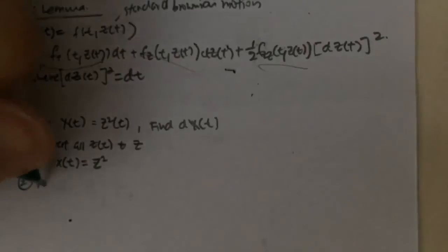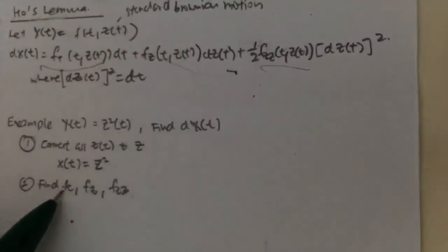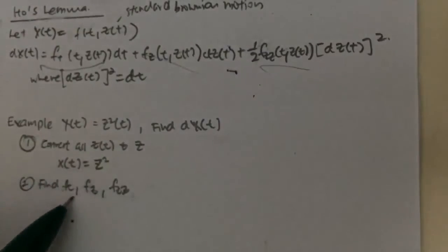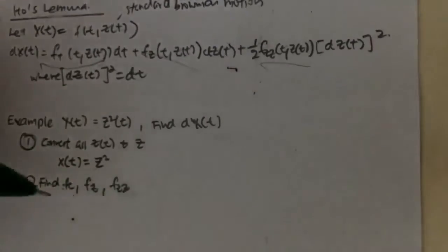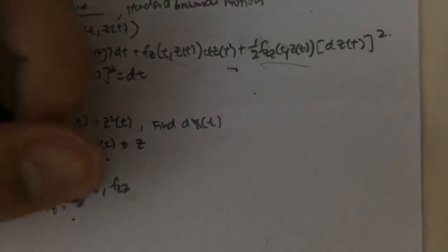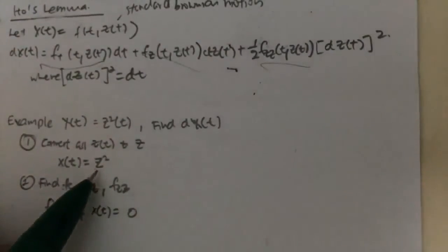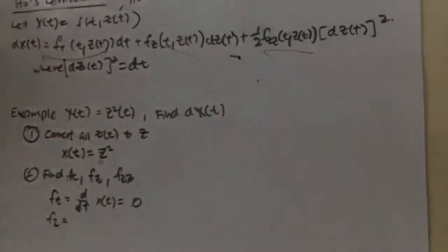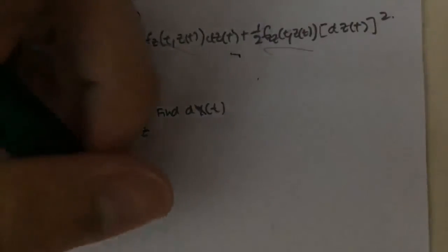We need to find F_t, F_z, and F_zz. F_t basically means that it is differentiating with respect to t of X(t). So F_t is just basically you differentiate with respect to t of X(t), which is, in this case, 0, because there's no t term, so this will be treated as constant, and if you differentiate with respect to t, this will become 0. F_z is basically equals to differentiate with respect to Z of your X(t), which is, in this case, 2Z.